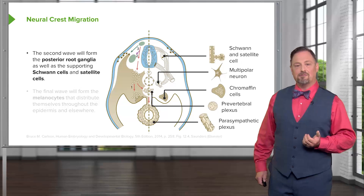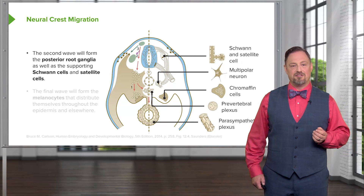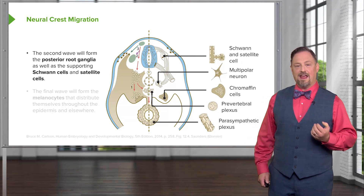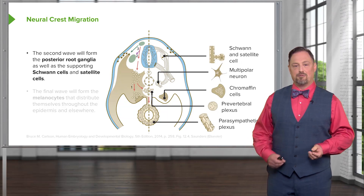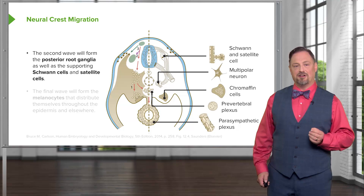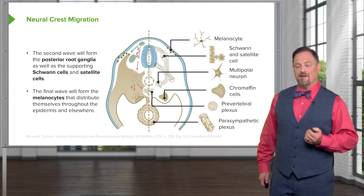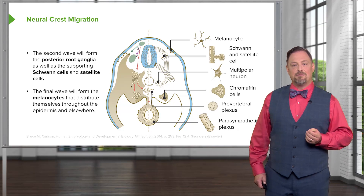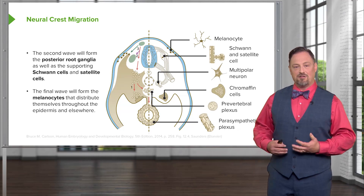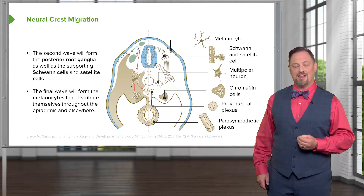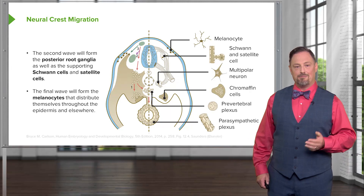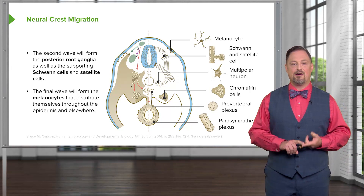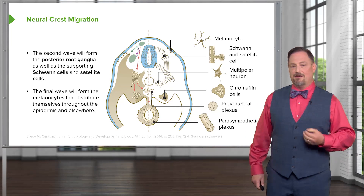The second wave of neural crest cell migration creates the posterior root ganglia on either side of the spinal cord, and the Schwann cells that surround and myelinate those axons are also derived from the neural crest. The final wave of neural crest cells becomes melanocytes, which are distributed throughout the entire body at the base of the epidermis as well as in hair follicles and the iris, creating the pigments that give us our unique hair, skin, and iris colors.